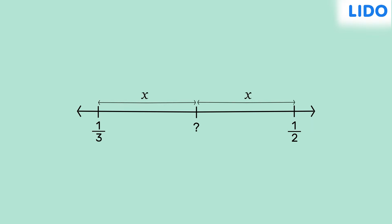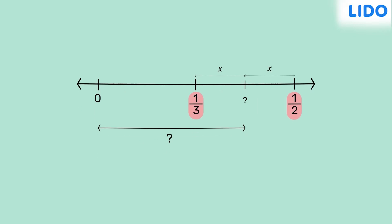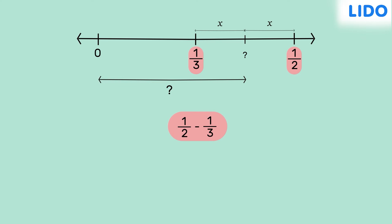In other words, we need that number's distance from 0. To do that, we must first find the distance between 1 third and half, and we know that it is equal to the difference between 1 third and half.